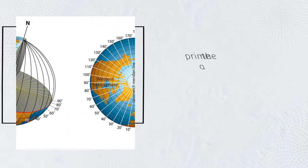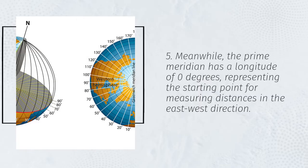5. Meanwhile, the prime meridian has a longitude of zero degrees, representing the starting point for measuring distances in the east-west direction.